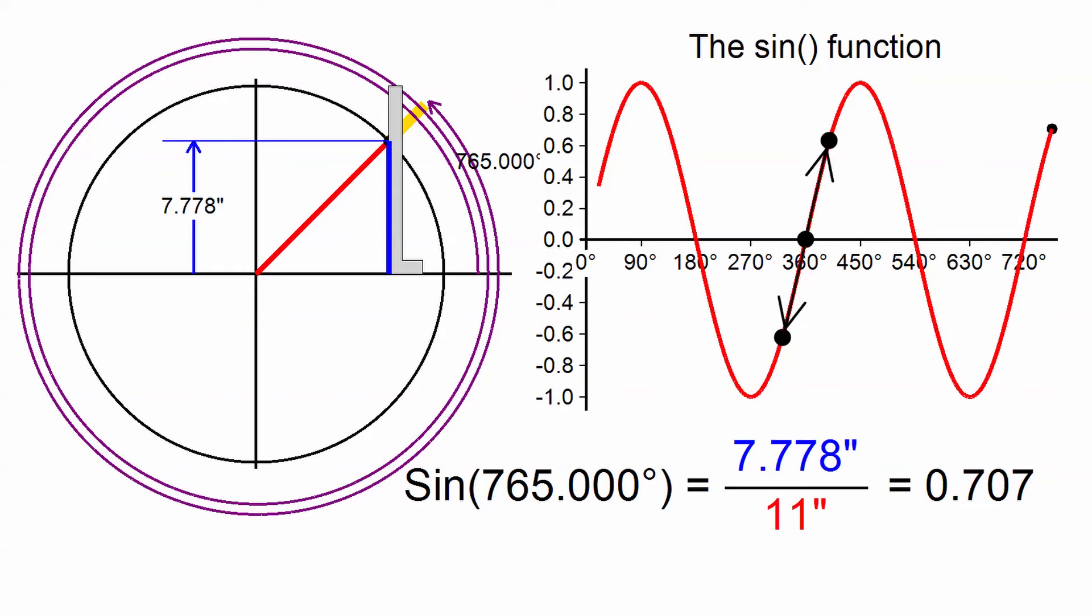When you start from the horizontal line through the wheel and go either clockwise or counterclockwise, the values of sine pass through the same values, but one is positive and the other negative. On the other hand, when you start from the vertical line through the wheel and go either clockwise or counterclockwise, the values of sine are the same either way.